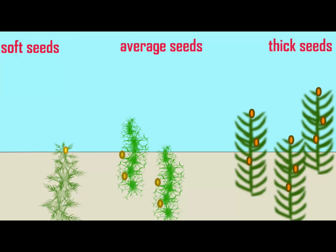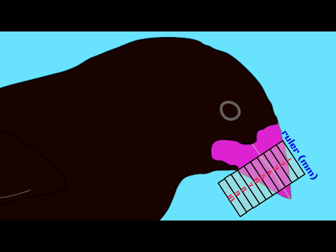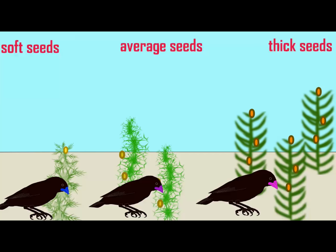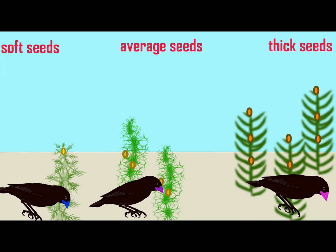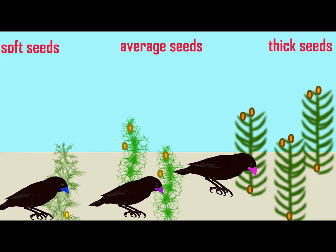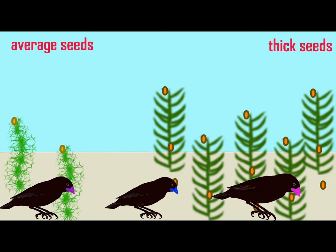These next examples are of directional selection acting on the beak depth feature of finch populations. Let's imagine that the habitat of these finches experiences a dry year, which then changes the frequency of the different types of plant found in the habitat, with more and more plants possessing thicker seeds.